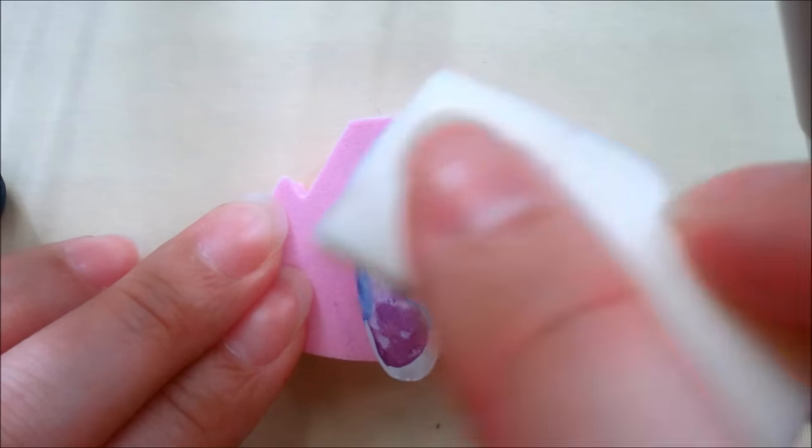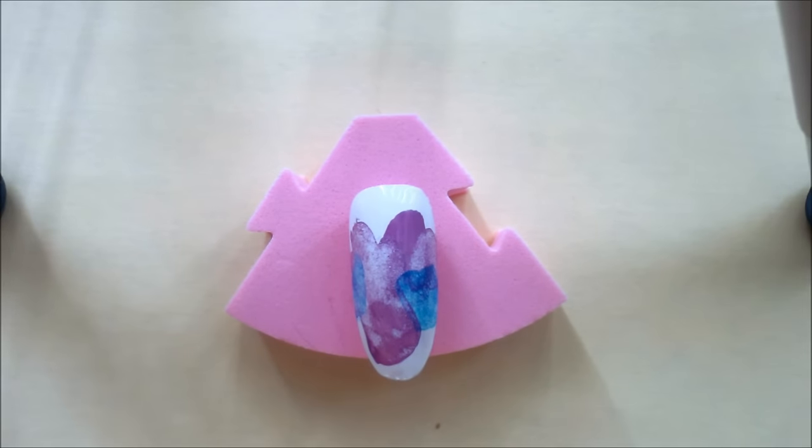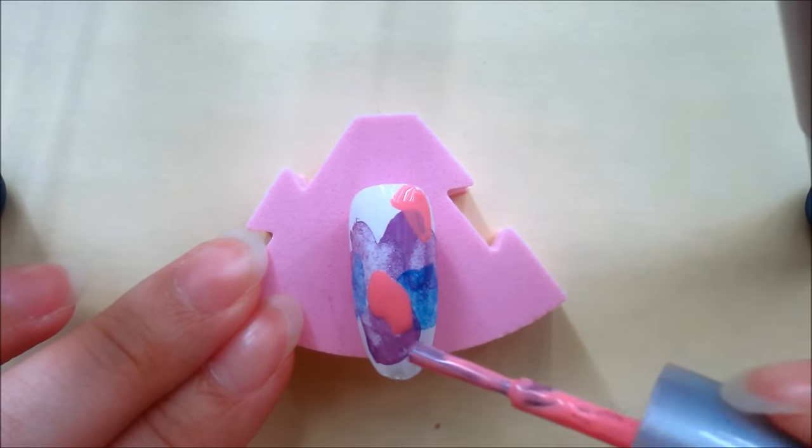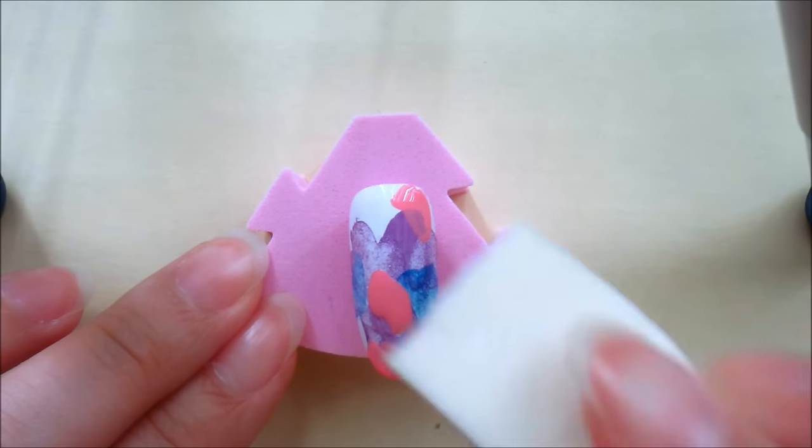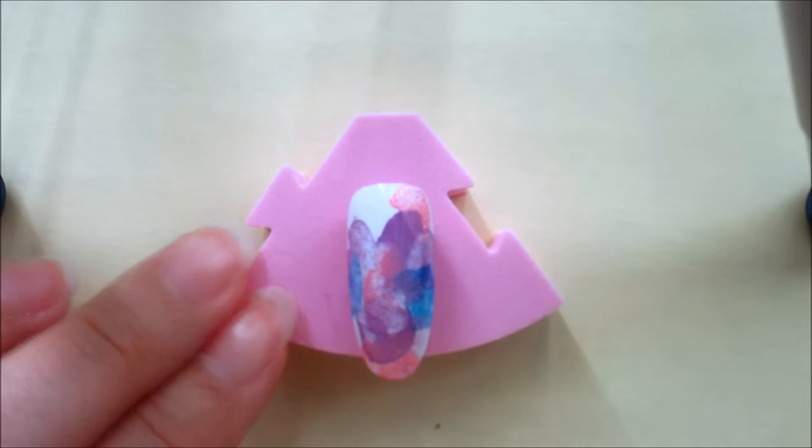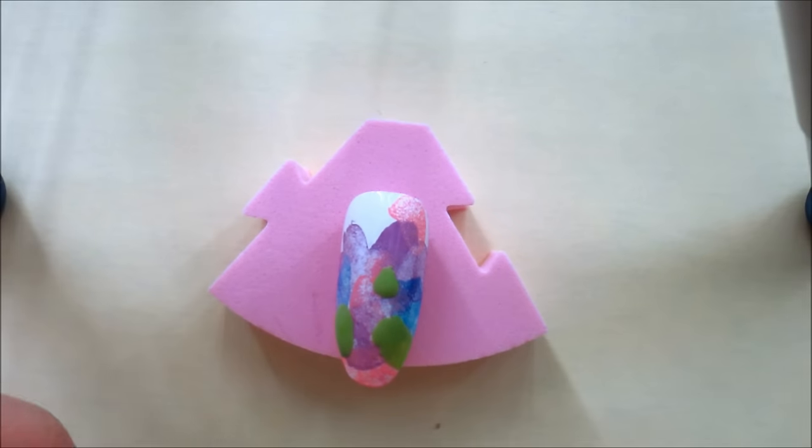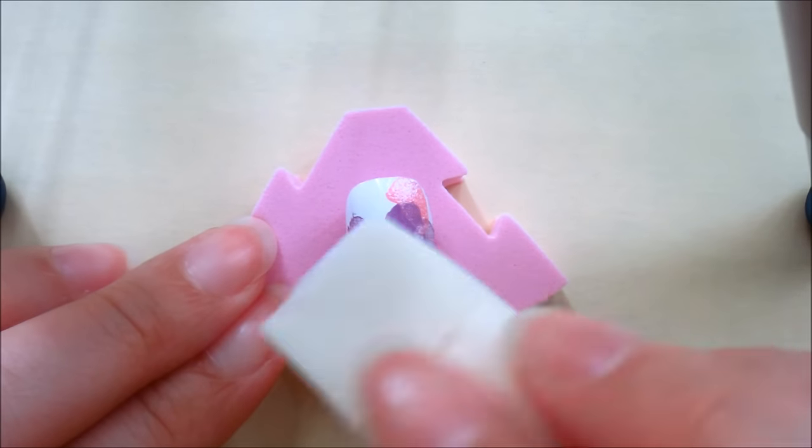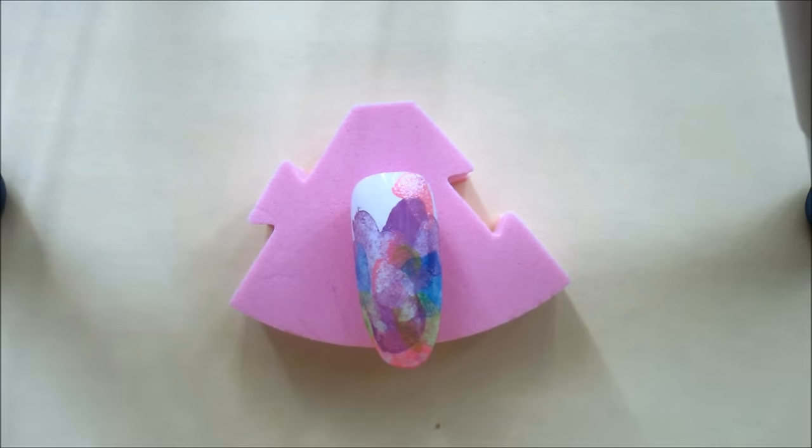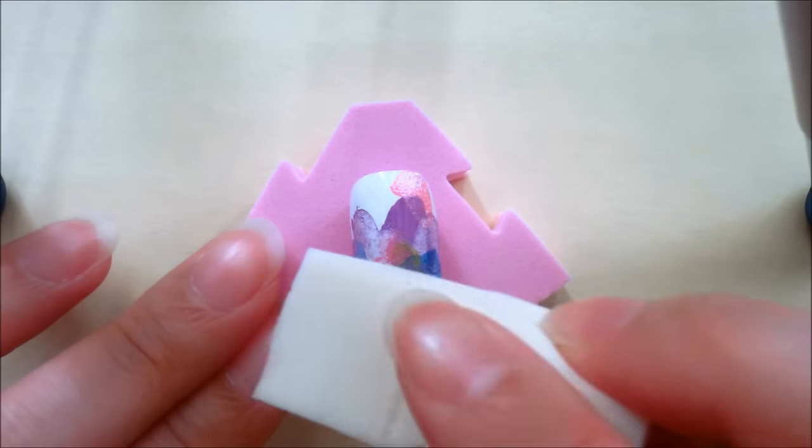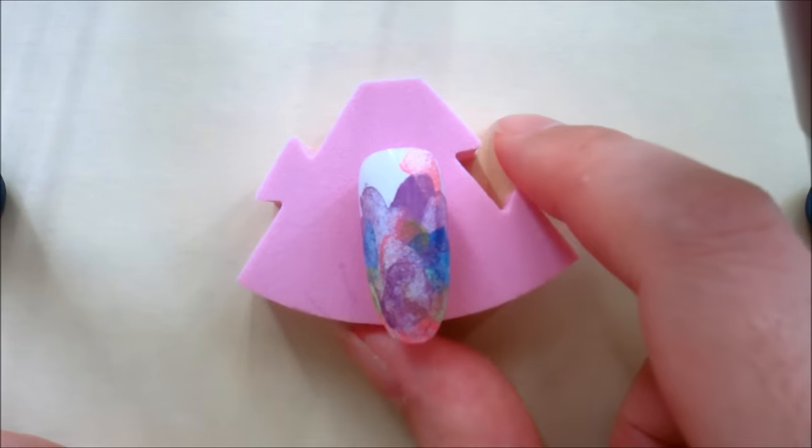Repeat the same steps using other colors such as blue, green and pink. I left some parts of the nail white to give it more dimension. You can paint on more layers of the colors until you get the desired look.